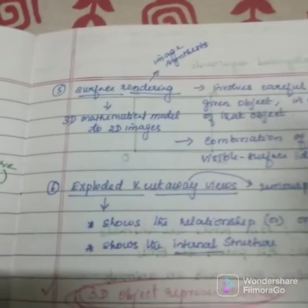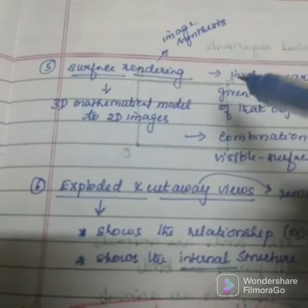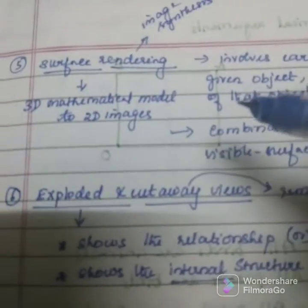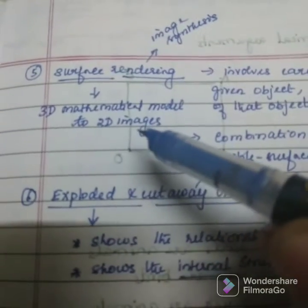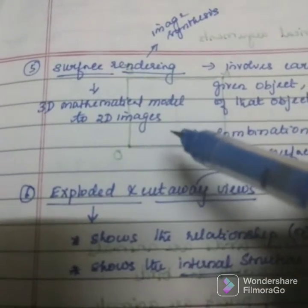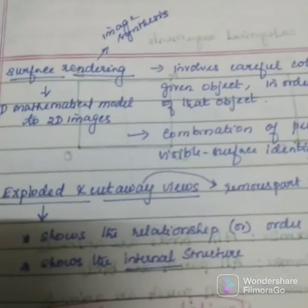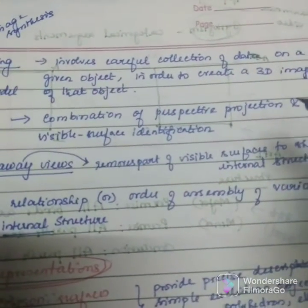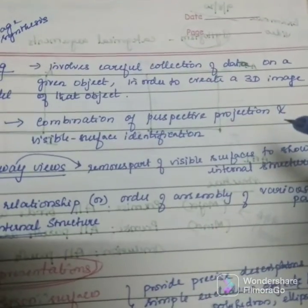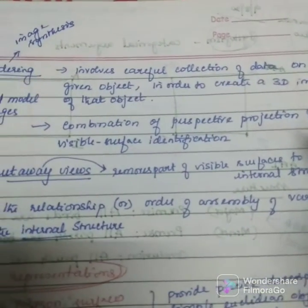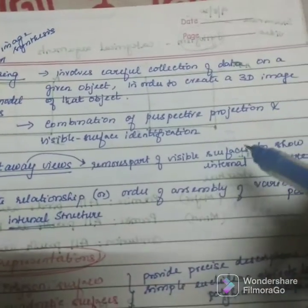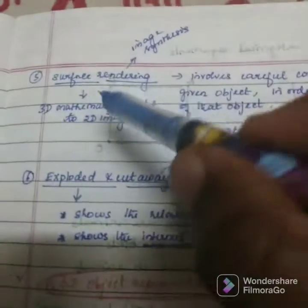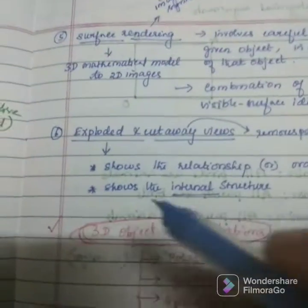The fifth is surface rendering, also known as image synthesis. It is usually used to convert a 3D mathematical model to 2D images. It involves careful collection of data on the given object in order to create a 3D image. A combination of perspective projection and visible surface identification will produce surface rendering.